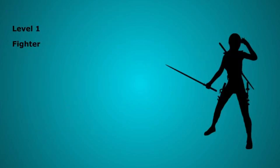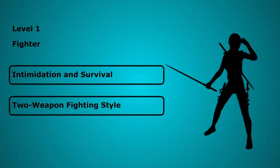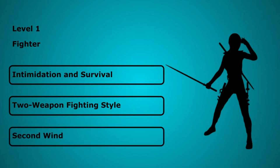For the first level pick Fighter, taking the Intimidation and Survival proficiencies. Take the 2 weapon fighting style letting you add your ability modifier to the damage dealt by off hand bonus action attacks made while dual wielding. You also get the second wind feature healing 1d10 plus your fighter level as a bonus action once per short rest.